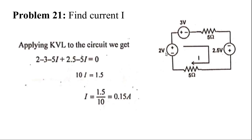If you apply the KVL, this is from drop to rise, so I have written plus 2. Similarly, this is also from drop to rise, again plus 3. Then this is minus 5i. This is from drop to rise, so this is plus 2.5, and this is minus 5i, which is equal to 0. If you simplify this, then 10i is equal to 1.5, then i equals 1.5 divided by 10.